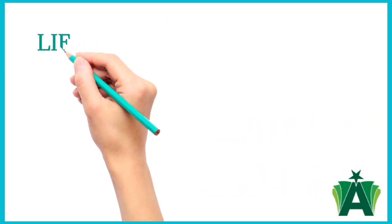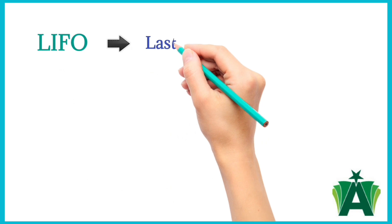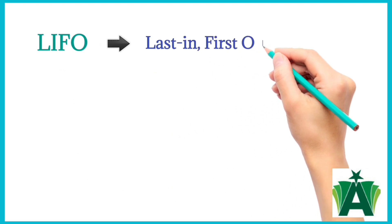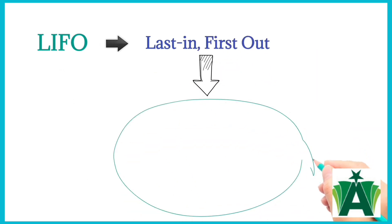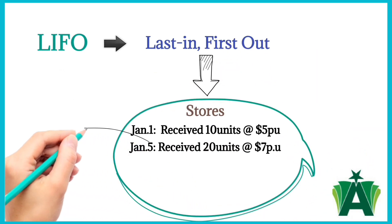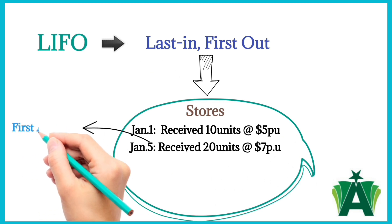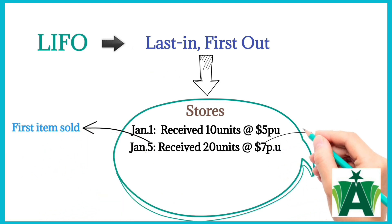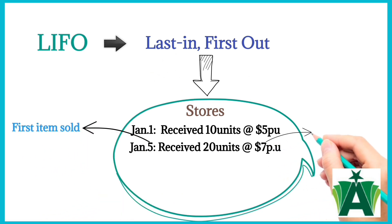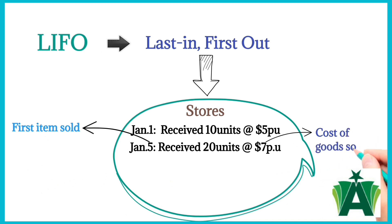LIFO stands for last in first out. The pricing of an inventory under the assumption that the last items received were the first items sold. This means that the cost of goods sold will be based on current prices.